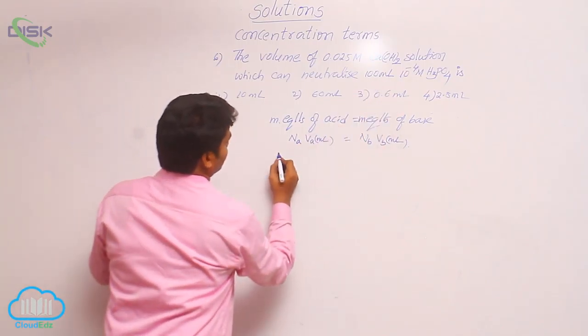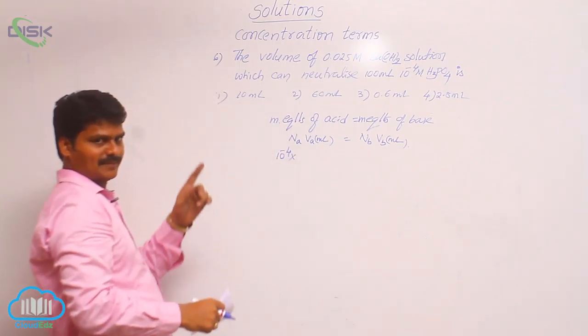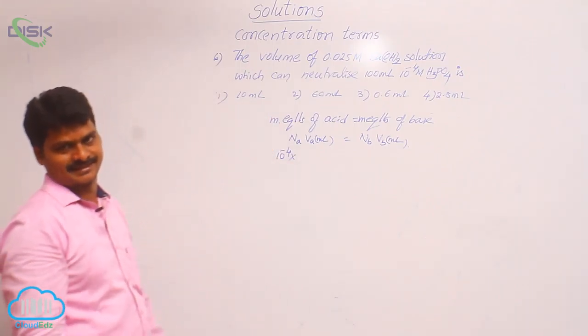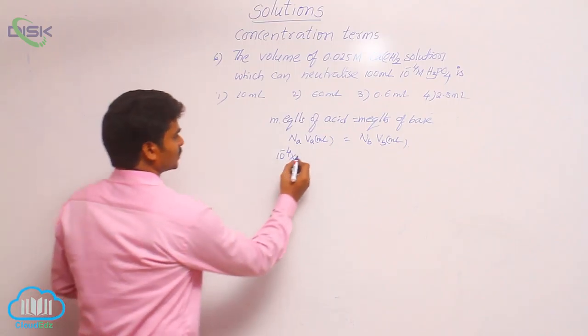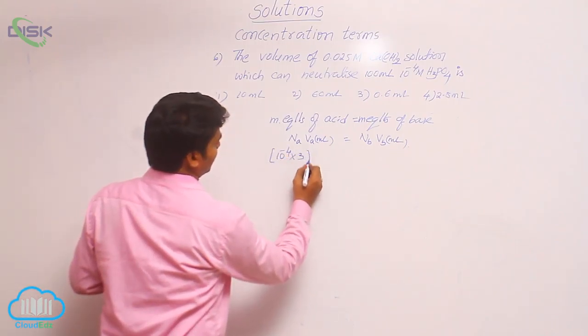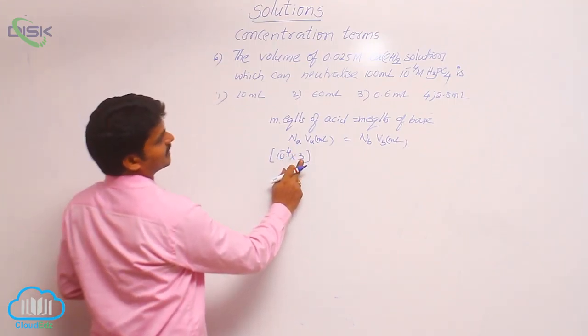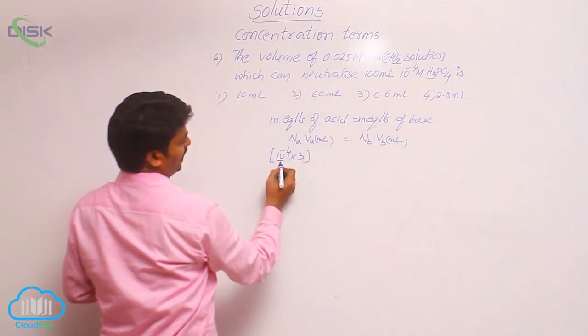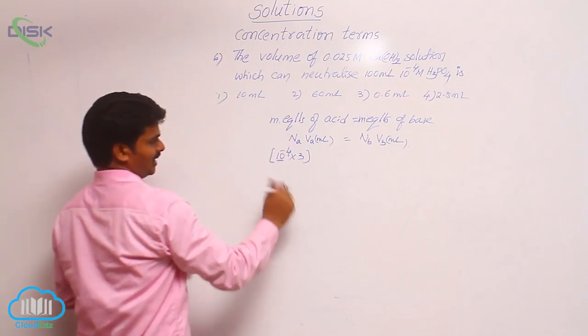Molarity already given, 10 power minus 4, into its n factor. H3PO4 is a tribasic acid, that means basicity 3, that means n factor is 3. Into 3, this is a normality of acid. 3 into 10 power minus 4 means molarity. Molarity into n factor gives normality.